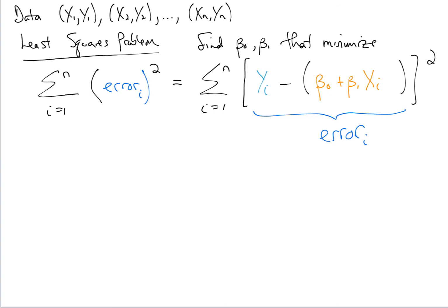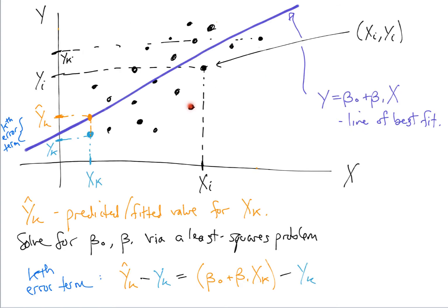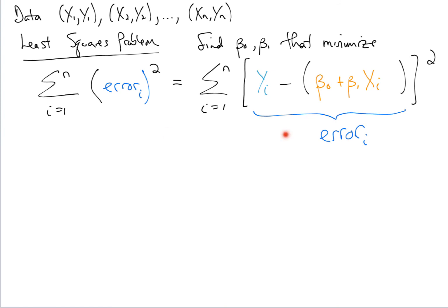One reason we use least squares is that it gives an optimization problem solvable with calculus. If we used the sum of absolute values of errors, we'd get a function not differentiable in beta_0 or beta_1. Least squares also has the nice property that squaring the errors gives a bigger penalty to points further from the line, while smaller errors are penalized less.